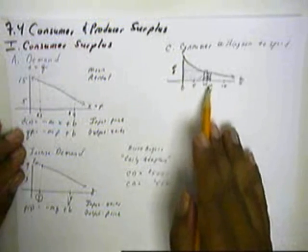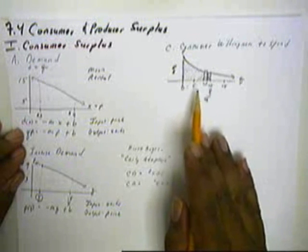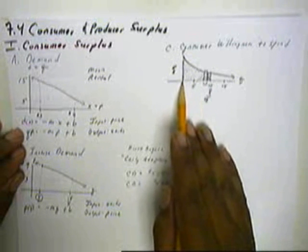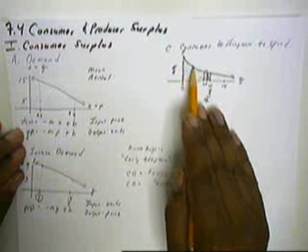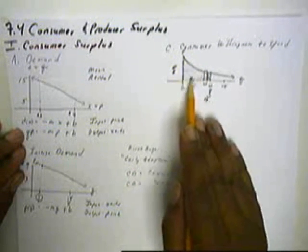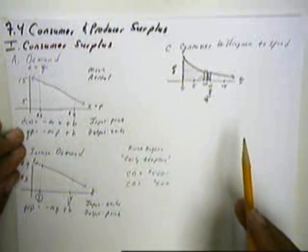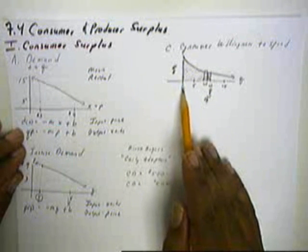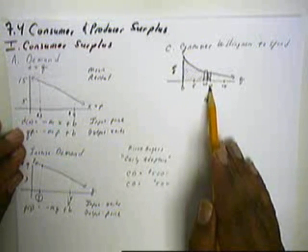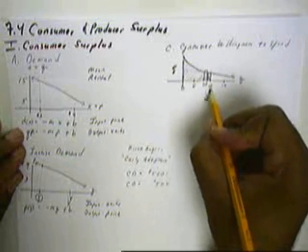This area is all the money that we would have collected as we marched from zero products out to 10 products. We got money here, we got money here, here and here. So we're adding up all the monies. This is what the consumer was willing to spend from the time we had zero products out to the time that we have 10 products out. We'll generically call that Q.